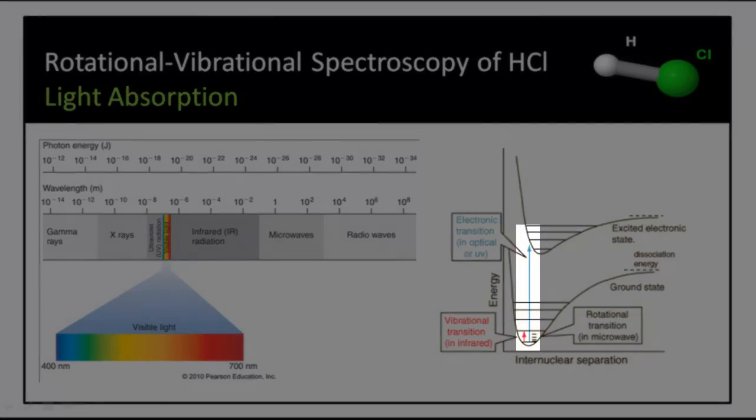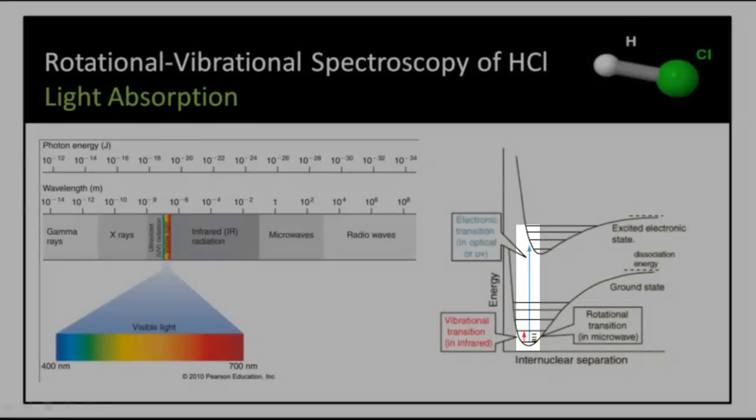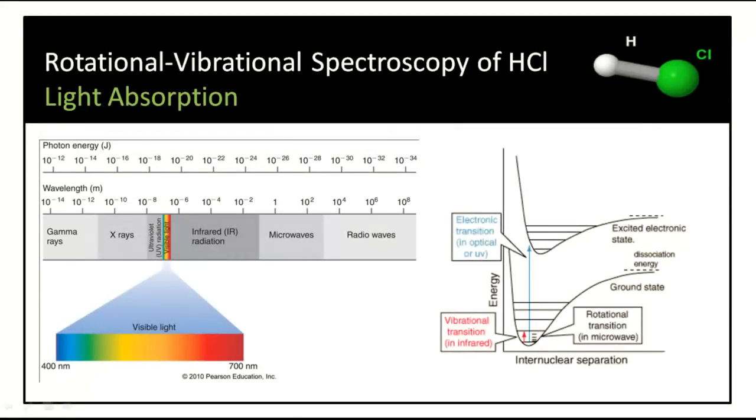For example, with UV visible light, an electronic transition from the ground electronic state to the excited electronic state will occur. This is studied by UV visible spectroscopy.